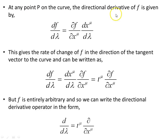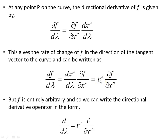At any point p on the curve, the directional derivative of f is given by df/d lambda = (partial f / partial x mu) * (dx mu / d lambda). These are the components of the directional derivative of f in the direction of the tangent vector of the curve. This equals T superscript mu times df/dx mu — that is, the components of the tangent vector times the partial derivatives of f. This tells us how the function f changes at point p in the direction of the tangent vector.